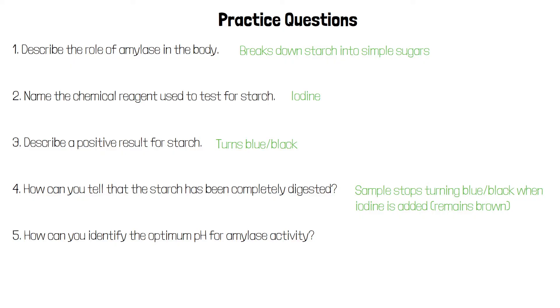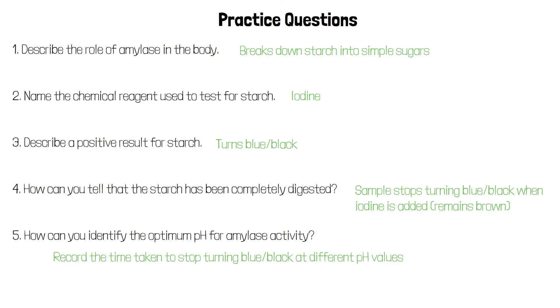We can find the optimum pH for amylase by recording the time taken for a starch sample to stop turning blue-black with iodine at different pHs. The optimum pH is the pH at which the starch is digested most quickly — so it's the one that stops turning blue-black the fastest.